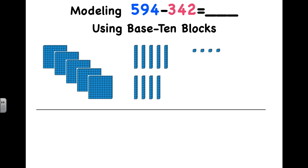We need to take away 342. When we're subtracting, we'll always start in the ones place and begin taking away from the ones place first. Since we're taking away 342, we'll take away two ones.